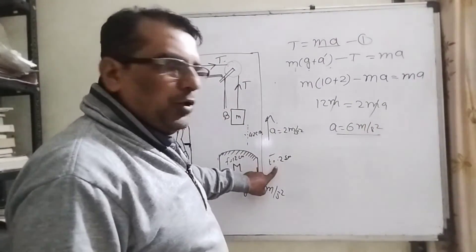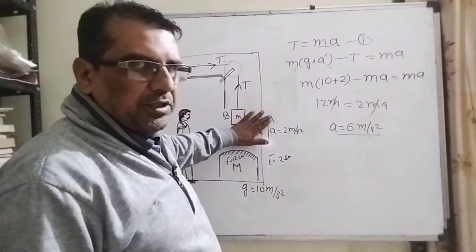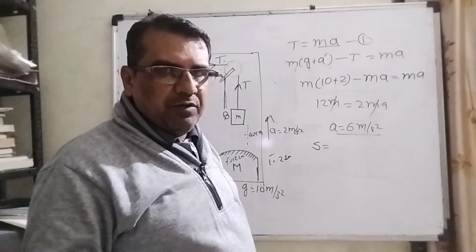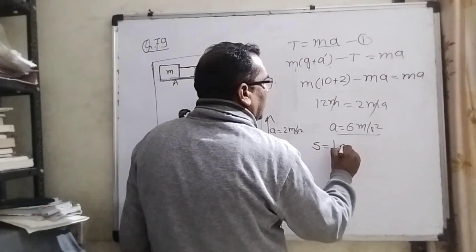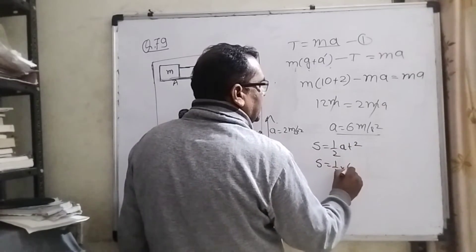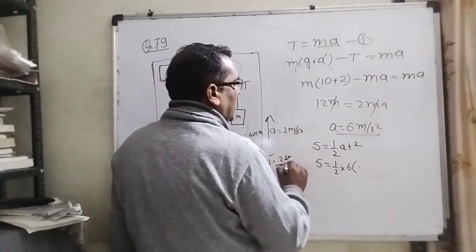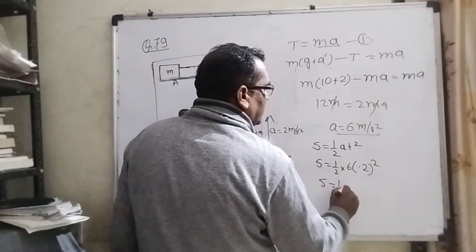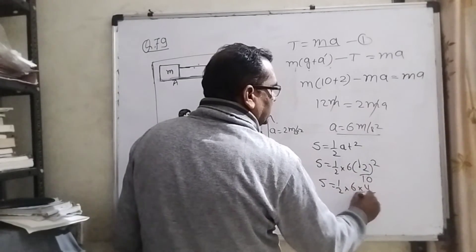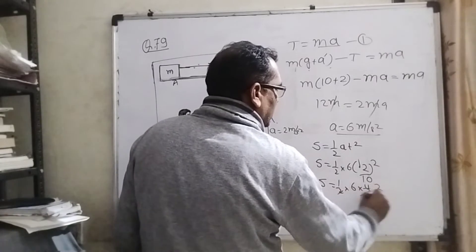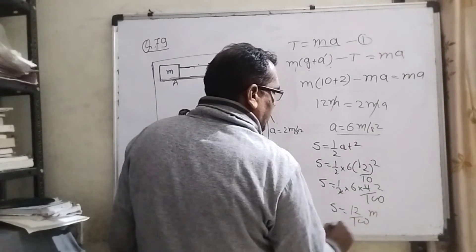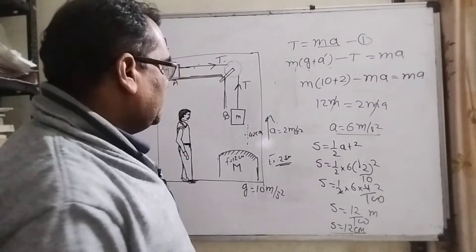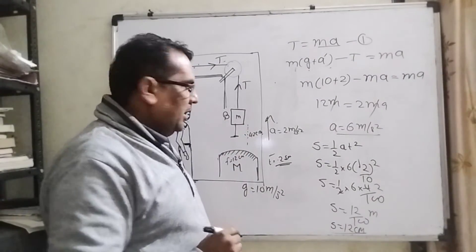अब जब t equal to 0.2 second पर block move हुआ — यह rest की condition थी — तो कितना distance cover किया? Formula है s = ut + ½at². यहाँ initial velocity 0 थी, तो s = ½ × 6 × (0.2)² = 12 by 100 meter, यानी 12 centimeter.